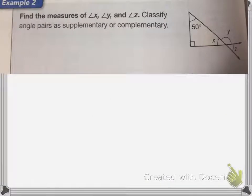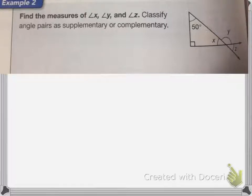For this next one, it wants to find the measures of angle X, angle Y, and angle Z, and then classify angle pairs as supplementary or complementary. A supplementary angle is two angles whose sum is 180 degrees. Complementary means that when you add the two angles, it equals 90 degrees.